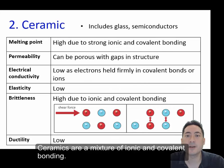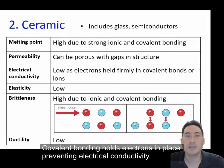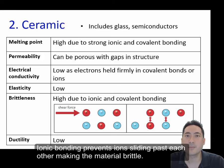Ceramics are a mixture of ionic and covalent bonding. Covalent bonding holds electrons in place, preventing electrical conductivity. Ionic bonding prevents ions sliding past each other, making the material brittle.